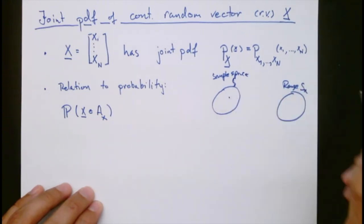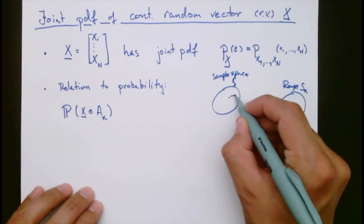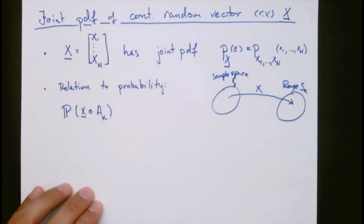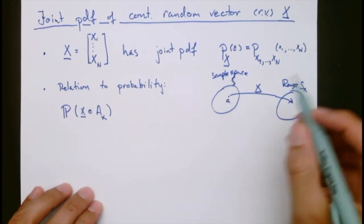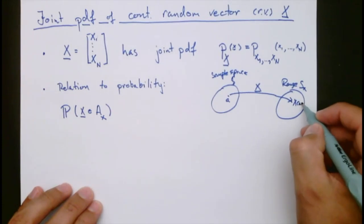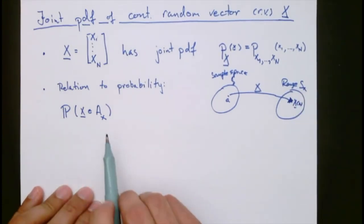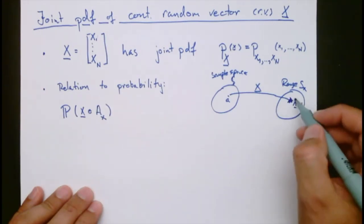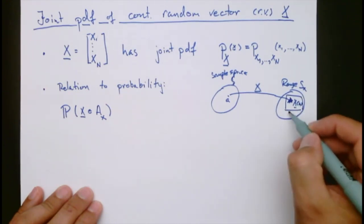We have some outcome here, a, and we have the corresponding value over here. We have the random vector that sends this outcome over to x of A. We are now interested in understanding if we have some set Ax over here in the range space. This could be, for instance, a square here, Ax.